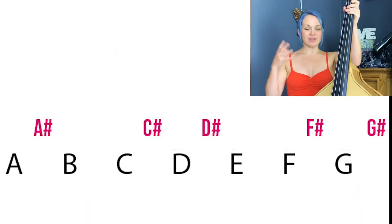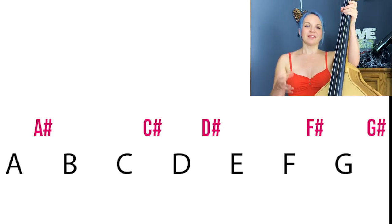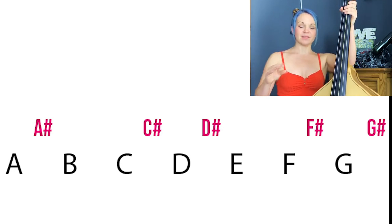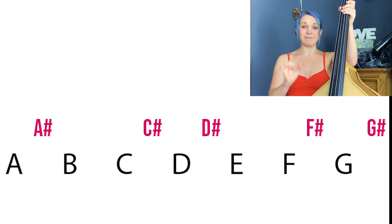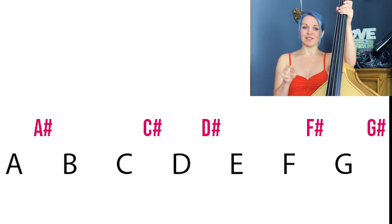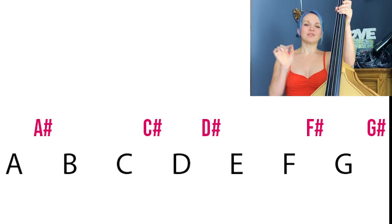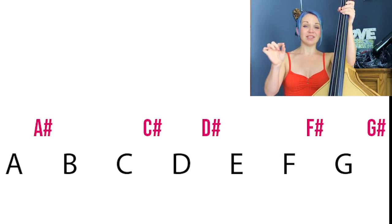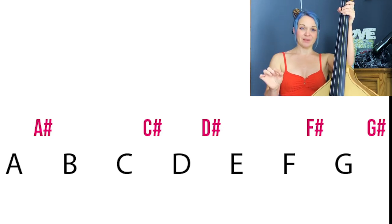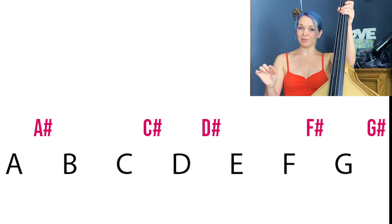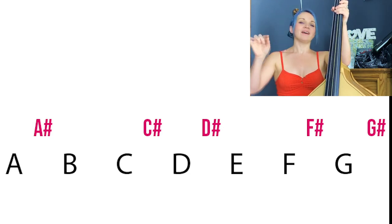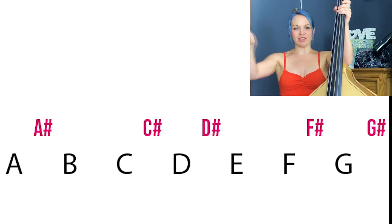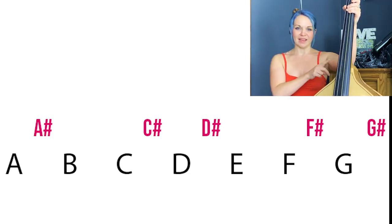As you can see in this image — the image with the sharps — you have A, A sharp, B, C. There's no sharp in between the B and the C. Then C sharp, D, D sharp, E, F — again, no sharp — F sharp, G, G sharp, and then you go right back to the beginning, back to A again.